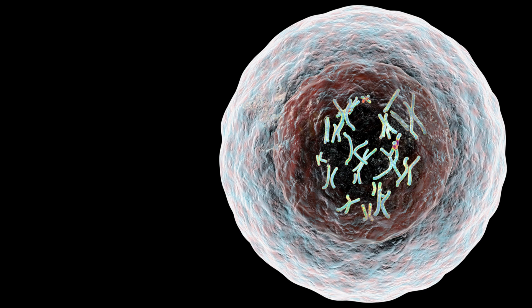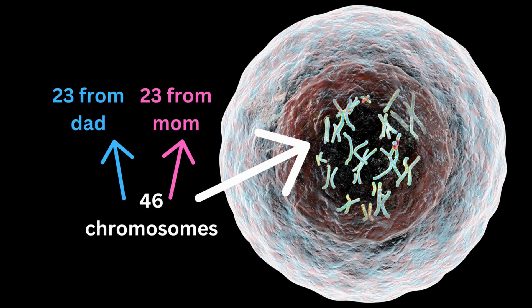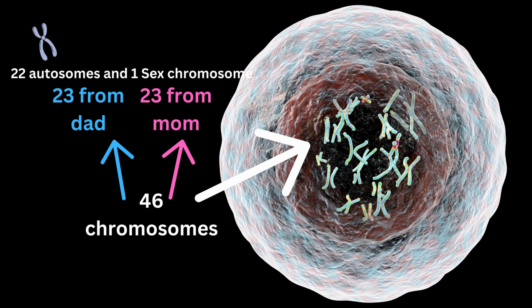All of us have a total of 46 chromosomes in our somatic cells. 23 chromosomes are inherited from the mother and 23 are inherited from the father. Out of the 23 chromosomes, we have 22 chromosomes which are autosomes and the 23rd chromosome is the sex chromosome.